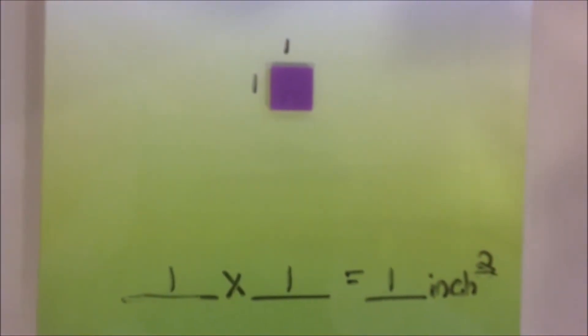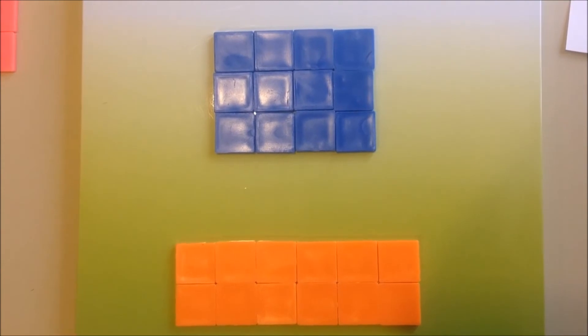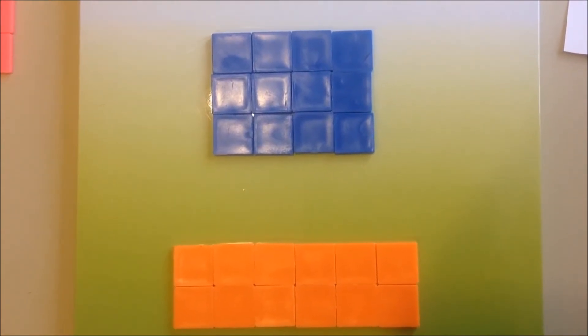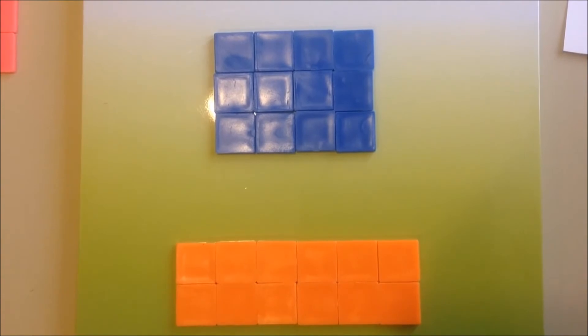Now, let's split our rectangles into unit squares. Here we have two different rectangles made up of unit squares. Even though they have different dimensions, do they have the same area? Well, let's find out.